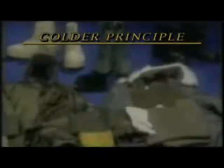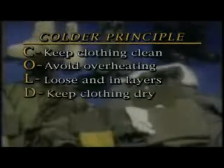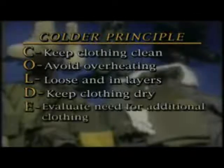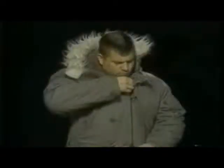A checklist survivors can use to ensure insulative effectiveness is known as the COLDER Principle: C — keep clothing Clean; O — avoid Overheating; L — wear clothing Loose and in layers; D — keep clothing Dry; E — Evaluate the need for additional clothing; R — keep clothing in good Repair. One of the best natural insulative materials is wool, which will insulate even when wet. A general rule for dressing in cold land is to wear a layer of cotton next to the skin to absorb and retain moisture, followed by a layer of wool, with a water-resistant material on top.